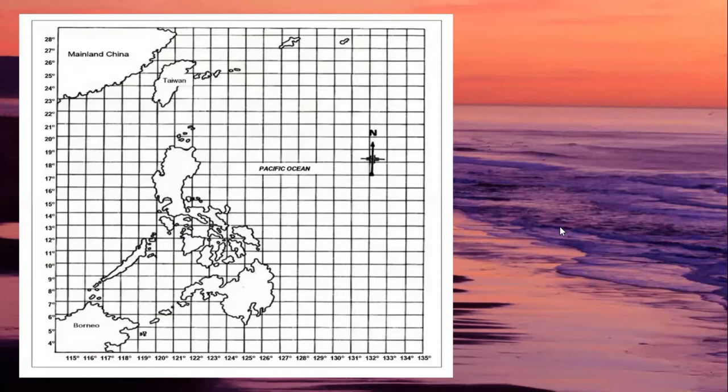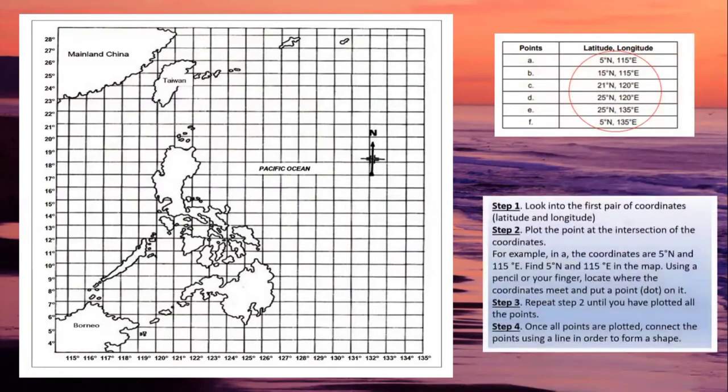So let's look into the different points that you are going to plot and together with the steps. So step number one, it says here that you have to look into the first pair of coordinates. And in this case, our first pair of coordinates is 5 degrees north and 115 degrees east. So first is you have to locate 5 degrees north. So here's 5. And 115 degrees east or longitude. And then you have to find their point of intersection.